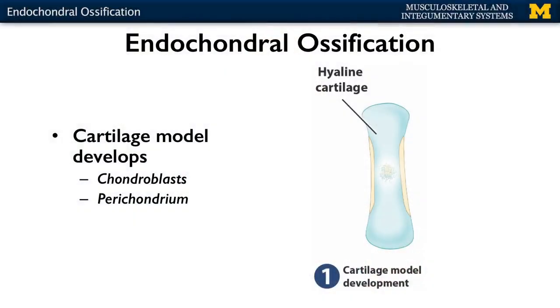The cartilage model is going to replace the mesenchymal model. So instead of osteoblasts at this level, you're having chondroblasts — and any time you see 'chond,' you know we're talking cartilage. You're also going to have a perichondrium, which is going to be replaced by periosteum, actually developing in this region.